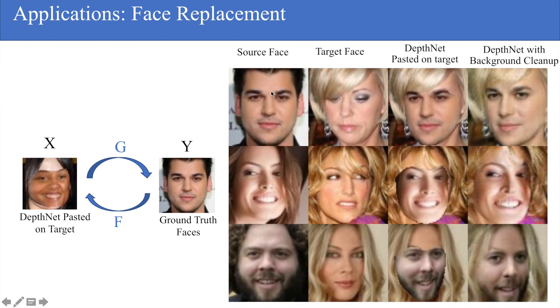Here are some results. We have the source face, the target face, the source face warped to the target. As you can see there are seams where it is pasted, so we use CycleGAN to clean up the seams and this is shown here.